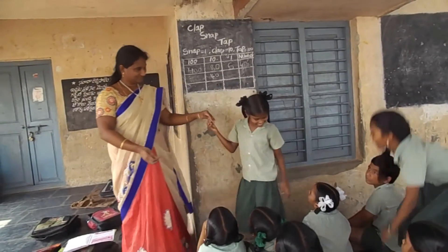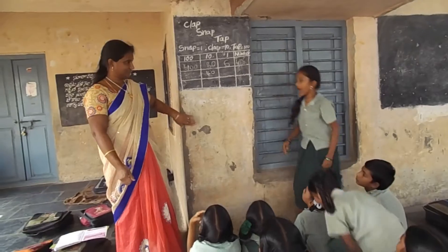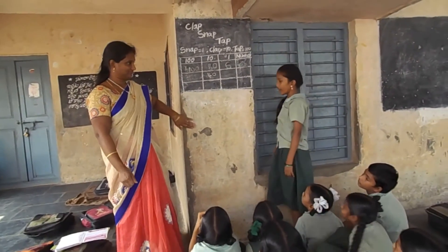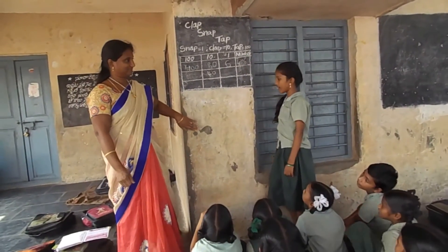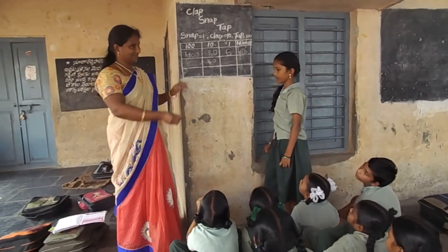Akshaya: Hundred, two hundred, three hundred, four hundred, five hundred.